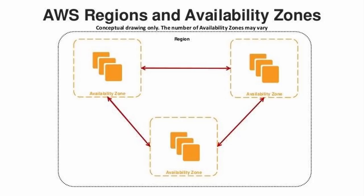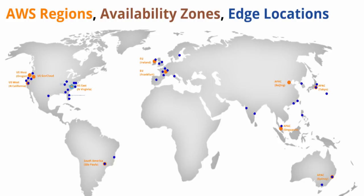You also need to understand regions and availability zones. Think of regions as different continents and availability zones as different data centers in the same continent. These data centers are placed in different locations so that if one goes down, you still have two others in the same continent.